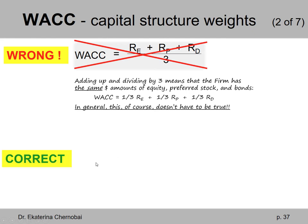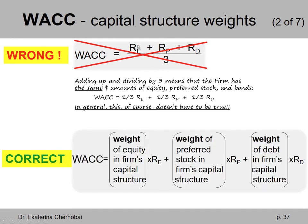So what does the weighted average mean? What would be the correct way of calculating the average of these three costs? We need to multiply each of these three costs — three R's — by its own weight. So: the weight of equity in the firm's capital structure multiplied by RE, plus the weight of preferred stock multiplied by RP, plus the weight of debt multiplied by RD. The key is these three weights don't have to be equal — they can be completely different fractions of the firm's capital structure — but they must add up to 100%.